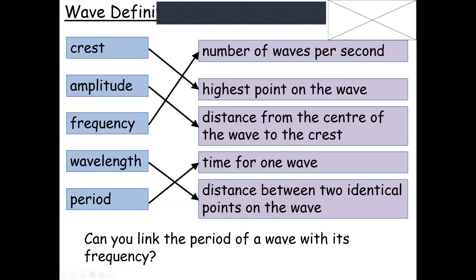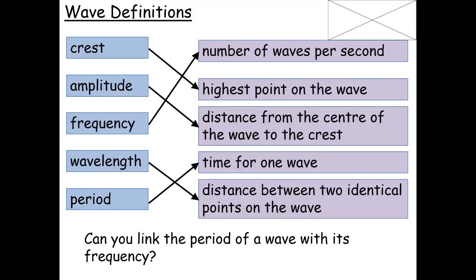If you had the frequency, you could do one divided by frequency to find the period. For example, if the frequency was two hertz and the question asked for the period — the time taken for one wave — you would say: period equals one divided by two hertz, which is one divided by two, which is 0.5. So the period is 0.5 seconds — the time taken for one wave is half a second. You could also work backwards: if the period is 0.5 seconds, one divided by 0.5 gives you two hertz.